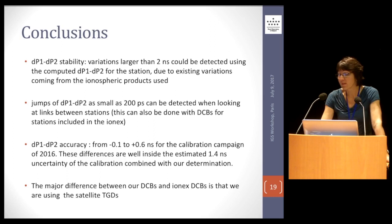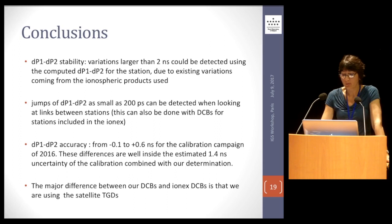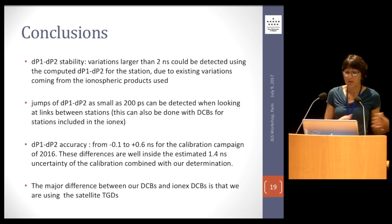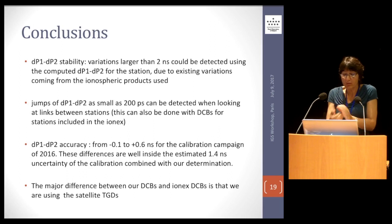In conclusion, the computation of P1 minus P2 from the ionX allows looking at the stability of the station hardware delay. Looking at one station alone, we cannot see variations smaller than two nanoseconds due to ionX effects, but comparing station to station, we can see jumps as small as 200 picoseconds. Concerning the accuracy of the reference P1 minus P2 in the TAI network, we are well within the 1.4 nanosecond combined uncertainty, as all differences between calibration and ionX-derived P1 minus P2 are well below one nanosecond. We must note that all ionX-based computations rely on TGDs transmitted by the satellites, so confidence in these values is essential.